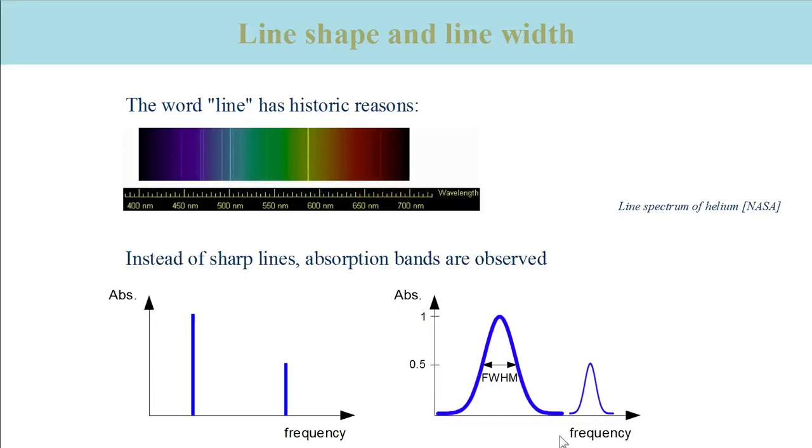Therefore, a range of energies can be absorbed and a plot of absorbance versus frequency gives absorbance bands with a certain width instead of narrow lines. We will characterize the width of a band with the width at half maximum absorption.